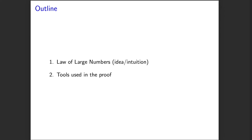Those tools are Chebyshev's inequality, and the fact that the variance of the sample mean of IID observations scales like one over the number of observations.